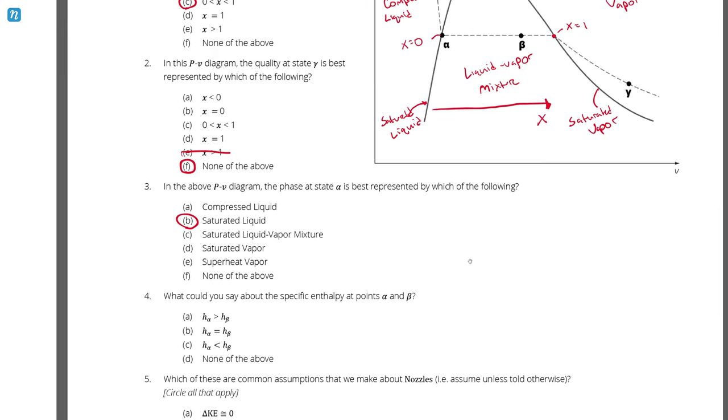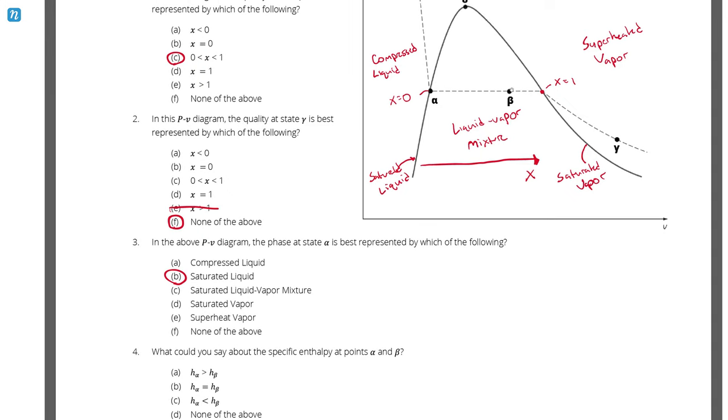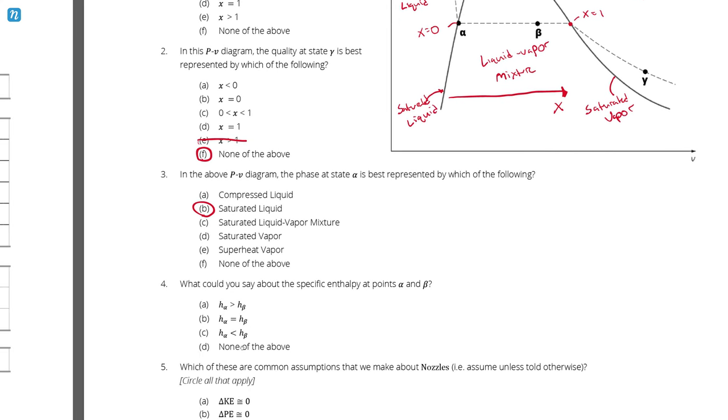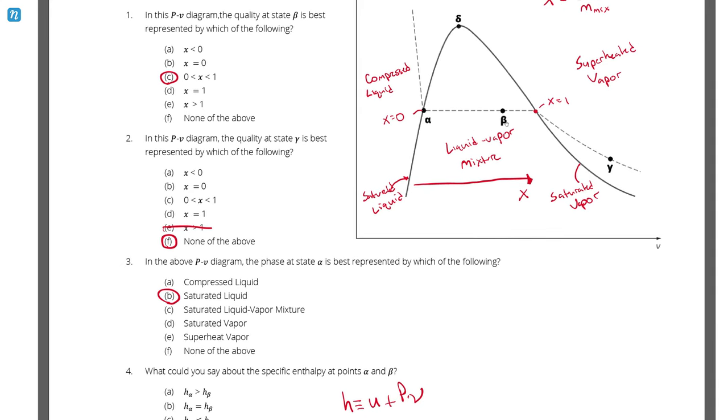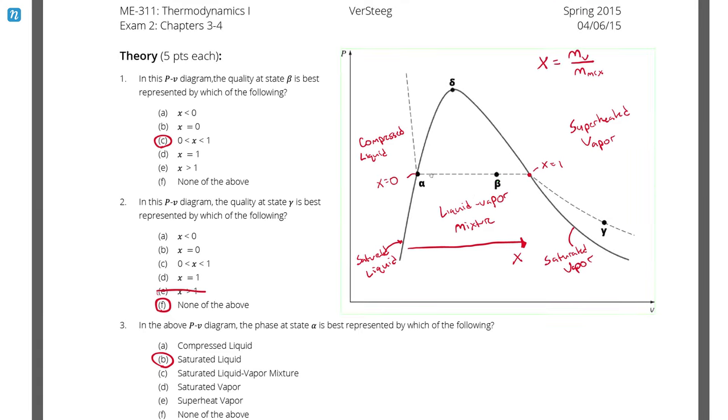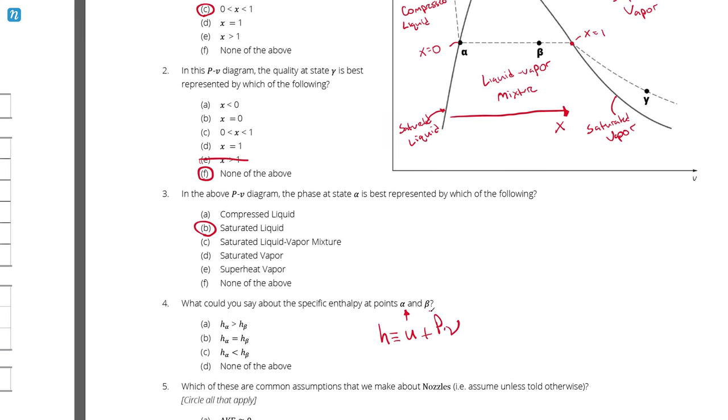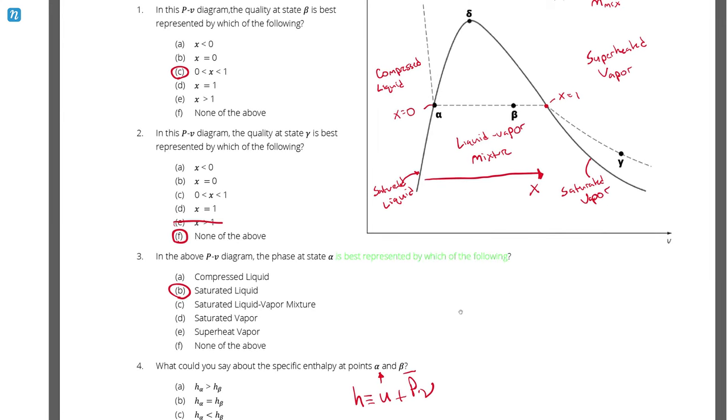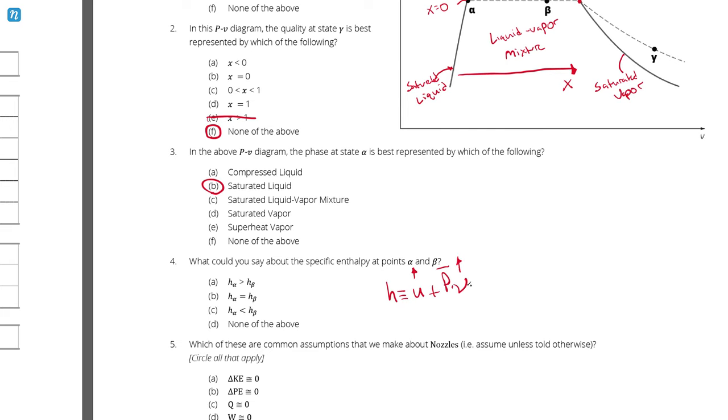Question number four. What could you say about the specific enthalpy at points alpha and beta? This is referring to these two points on this PV diagram. And I'm asking which enthalpy is greater? Or are they the same? There are a couple of ways to answer this question. You could, for example, look at the definition of specific enthalpy. This lowercase h is referring to specific enthalpy. And we define that as being the specific internal energy plus the pressure times specific volume, h = u + Pv. You could look at this and say, well, I know internal energy is increasing from alpha to beta. So this quantity is going to be going up from alpha to beta. The pressure is going to be constant. Because alpha and beta are horizontal on this pressure specific volume diagram. Therefore, they have the same pressure. And then beta has a higher specific volume. Therefore, the specific volume is also increasing. So if this quantity and this quantity is increasing, it must mean that the specific enthalpy at beta is greater than alpha.